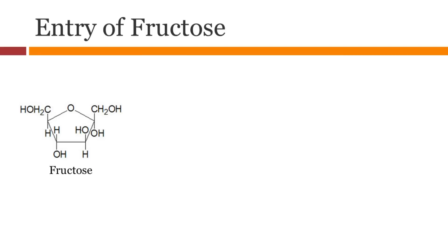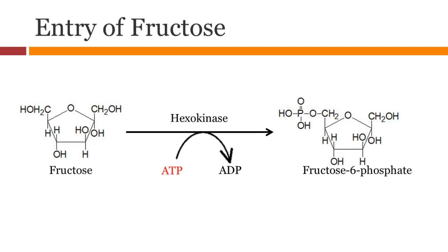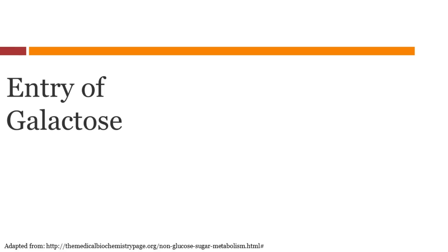Fructose is converted to fructose 6-phosphate by adding a phosphate group. ATP is required to drive this reaction and is facilitated with hexokinase — the same enzyme which converted glucose to glucose 6-phosphate in the first step of glycolysis.